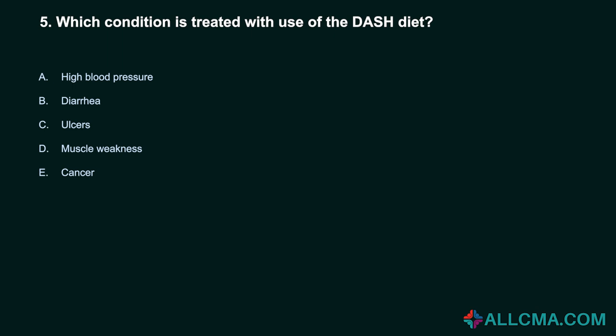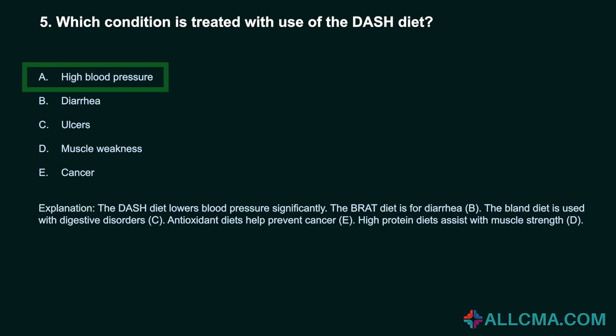Question 5: Which condition is treated with the DASH diet? a) high blood pressure, b) diarrhea, c) ulcers, d) muscle weakness, e) cancer. Correct answer: A, high blood pressure. The DASH diet lowers blood pressure significantly. The BRAT diet is for diarrhea. The bland diet is used with digestive disorders. Antioxidant diets help prevent cancer. High protein diets assist with muscle strength.